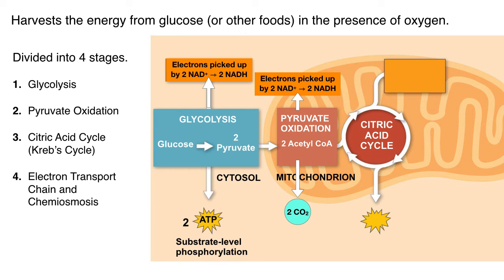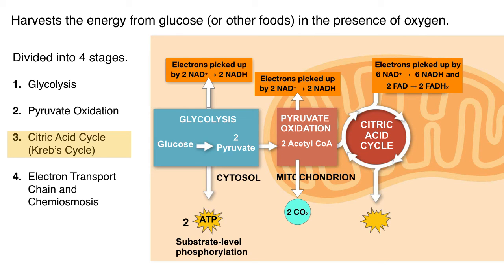Now let's move on to the third stage of cellular respiration: the citric acid cycle, also called the Krebs cycle, after the scientist who discovered the process. This process also occurs in the mitochondria — specifically in the liquid interior called the matrix, which is also where pyruvate oxidation happens. The citric acid cycle is a series of eight reactions that start and end with the same molecule, hence why it's a cycle. At the end of this process, electrons are once again carried away by electron carriers — our trusty NAD+, but also a second carrier, FAD.